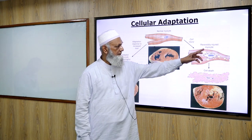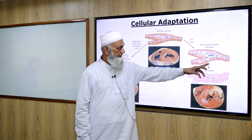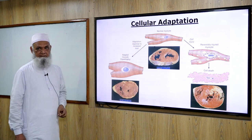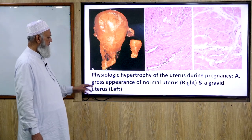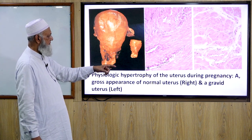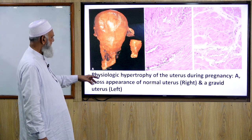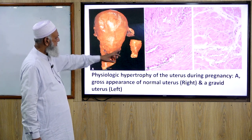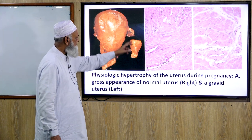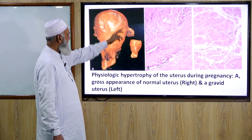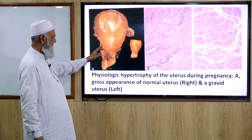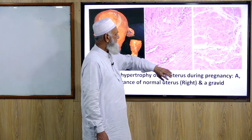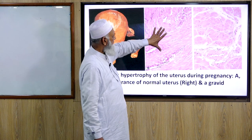This represents the progression from cellular hypertrophy to reversible cell injury and ultimately necrosis. Adaptive changes are illustrated by physiological hypertrophy of the uterus during pregnancy — shown here as the gross appearance of a gravid uterus compared to the normal uterus — and the histological picture showing hypertrophied muscle versus normal muscle.